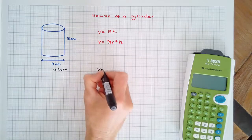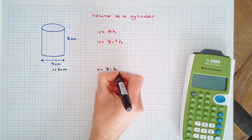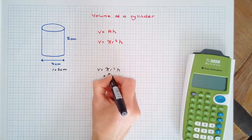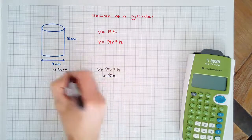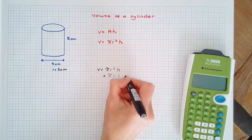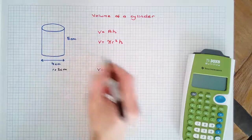The volume is πr² times height. In this case, π times 2² times the length of the cylinder, 5cm.